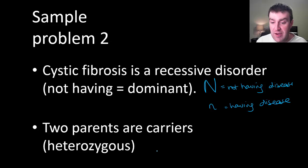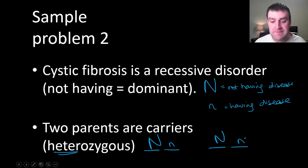Now we need to think about our parents. Organisms will always have two letters for a particular gene. And here we're given that the two parents are both carriers. Carriers is another way of saying heterozygous. Heterozygous means that you have the two different letters. So you have a capital and a lower case. And usually we write the capital one first. Okay.